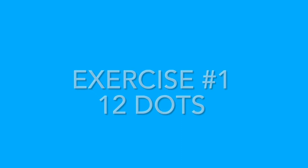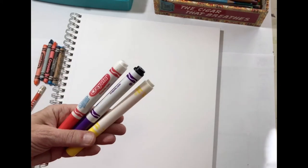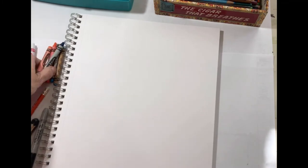Exercise one: 12 dots. Let's start off with something called the 12-dot exercise, which is going to be non-representational. I've pulled out some supplies you'd just have around the house — a pencil, different types of pencils, a Sharpie marker, some Crayola markers. If you have paints or any other art materials, feel free to bring those out. I also have colored pencils.